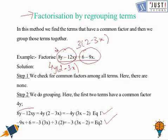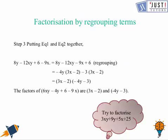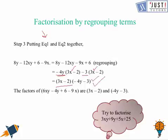We can rewrite using minus as a common factor: 4y(3x − 2) from the first group and −3(3x − 2) from the second. Putting them together: 4y(3x − 2) − 3(3x − 2). Since (3x − 2) is common, we factor it out, leaving (3x − 2)(4y − 3) as the final answer.